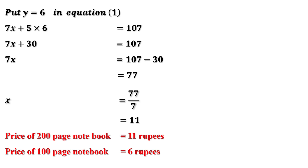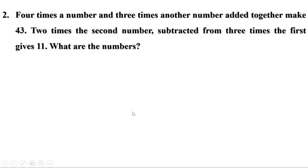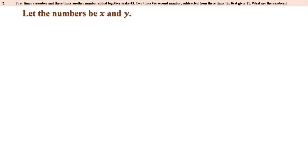Now let us do the remaining problems on pages 40 and 41. Four times a number and 3 times another number added together make 43. Two times the second number subtracted from 3 times the first gives 11. What are the numbers? Let us take them as X and Y. Four times the first plus 3 times the second equals 43, giving us 4X plus 3Y equal to 43. Let us consider this as the first equation.